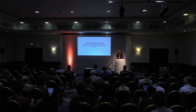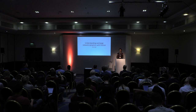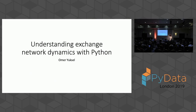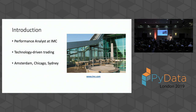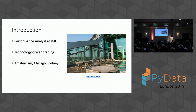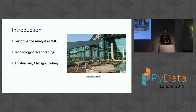I'm going to talk about my work on exchange network dynamics — essentially trying to understand a complex system where the data is not enough to tell a story, so you have to fill in the gaps with your knowledge. IMC is a trading company based in Amsterdam, with offices in Chicago and Sydney. I work as a performance analyst there, where performance means the performance of networks and systems. Most of our trading is done not by people but by auto traders hosted on servers.